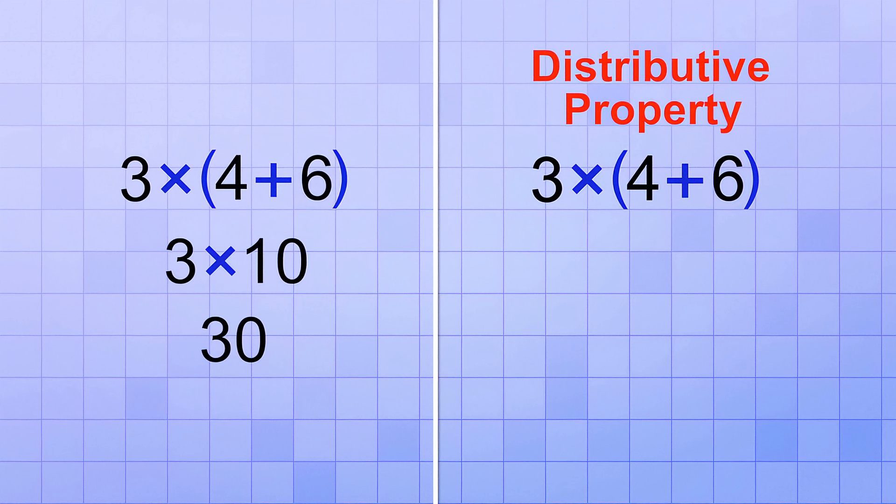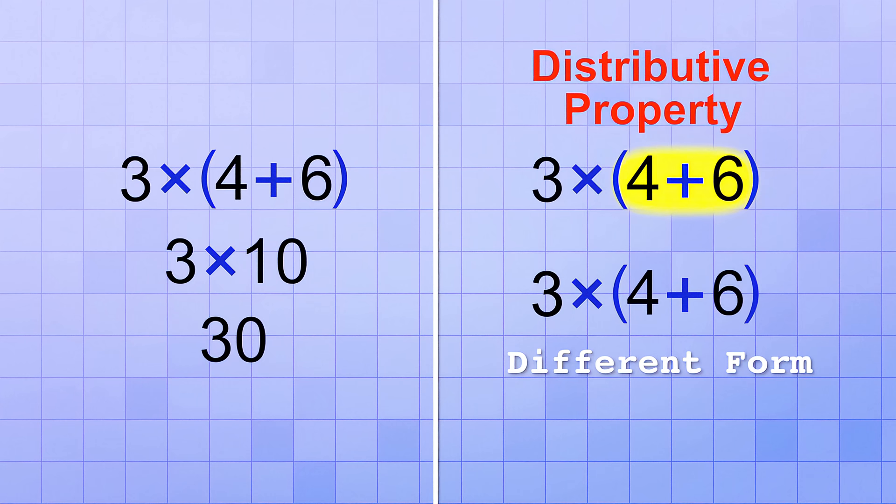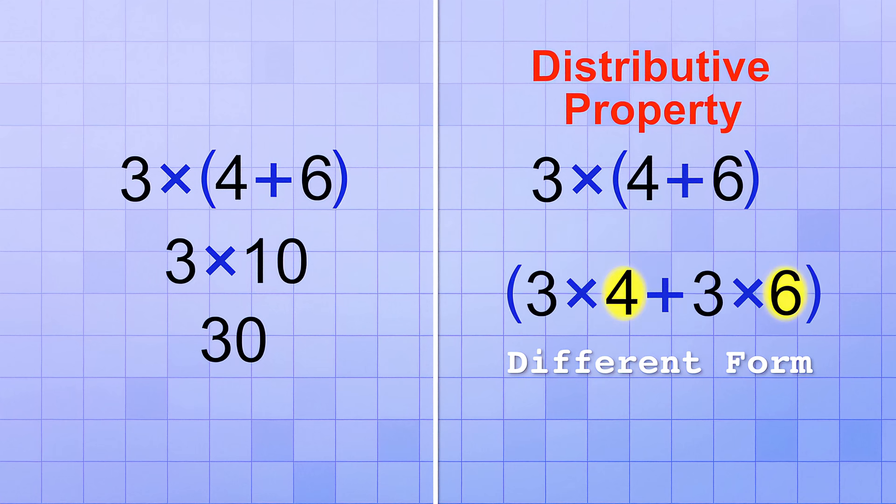Now, let's use the Distributive Property. The Distributive Property allows us to change this expression into a different form. Instead of multiplying 3 by the whole group at once, we can distribute that factor of 3 and multiply it by each member of the group individually. That means we'll make a copy of the 3 times for each member of the group. So after applying the Distributive Property, our expression looks like this: 3 times 4 plus 3 times 6. Because we distributed the multiplication to each member of the group, the group isn't needed anymore, so the parentheses can go away.